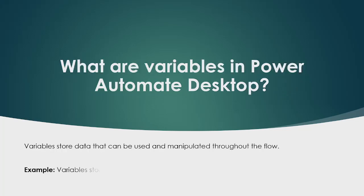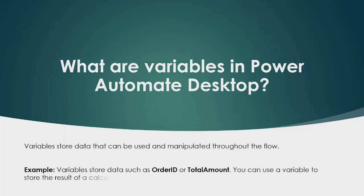The next question is: what are variables in Power Automate Desktop? Variables store data that can be used and manipulated throughout the flow. For example, variables store data such as 'Order ID' or 'Total Amount'. You can use a variable to store the result of a calculation and then use it in subsequent actions.